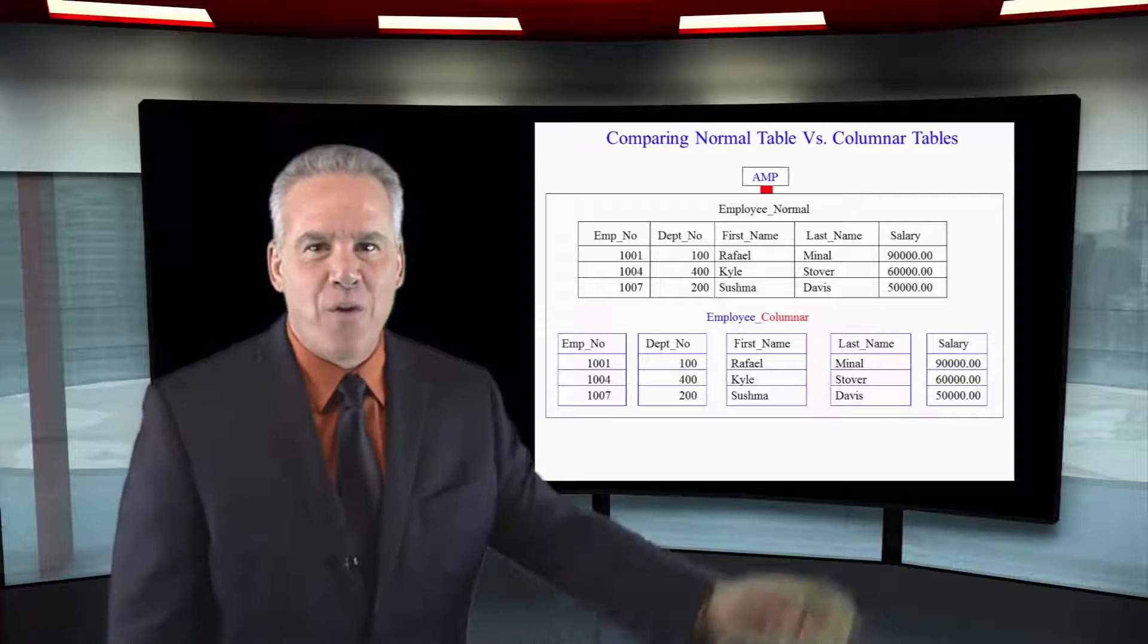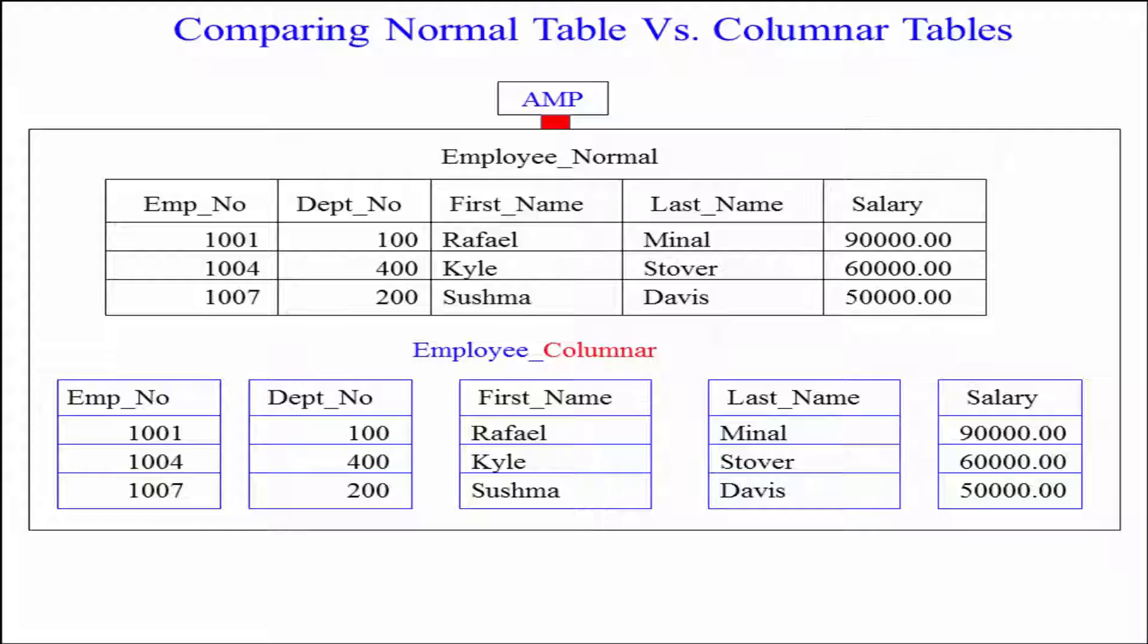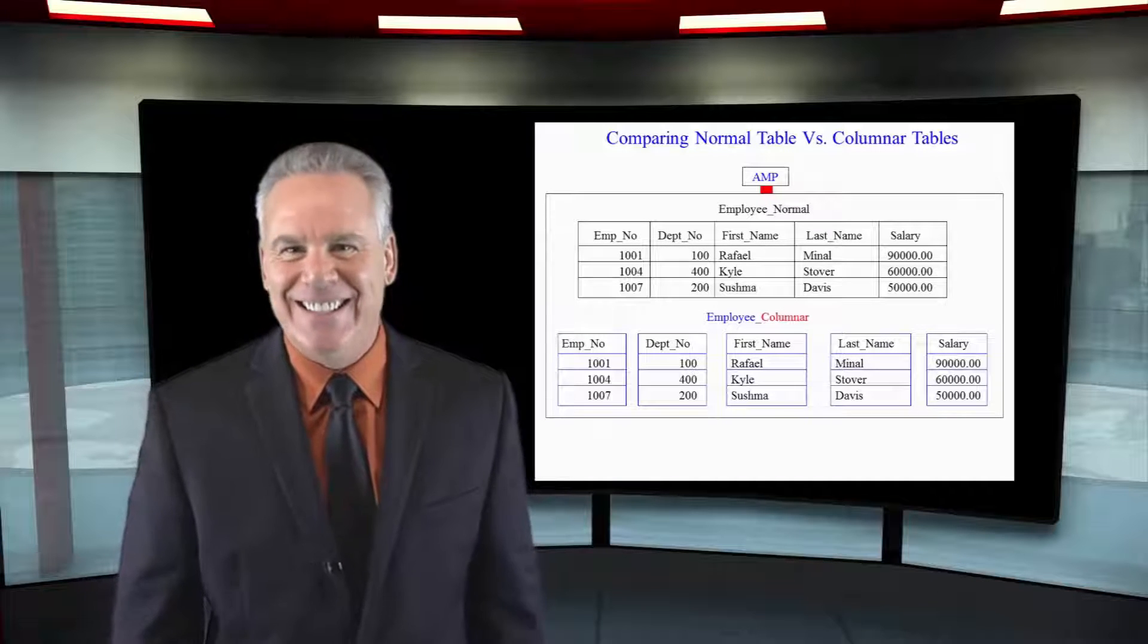I've drawn the data for you. Here's an excellent picture. In the top, we see our three rows. We see our five columns. In the bottom, we see the same information, but each column is its own separate container.